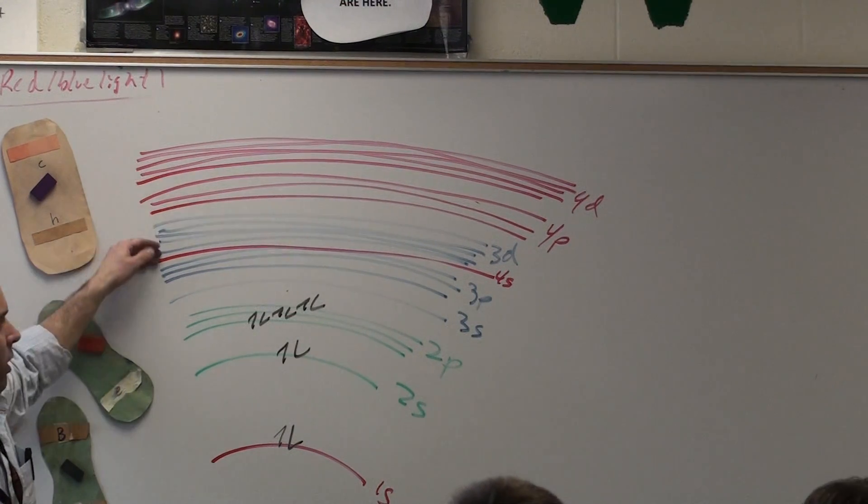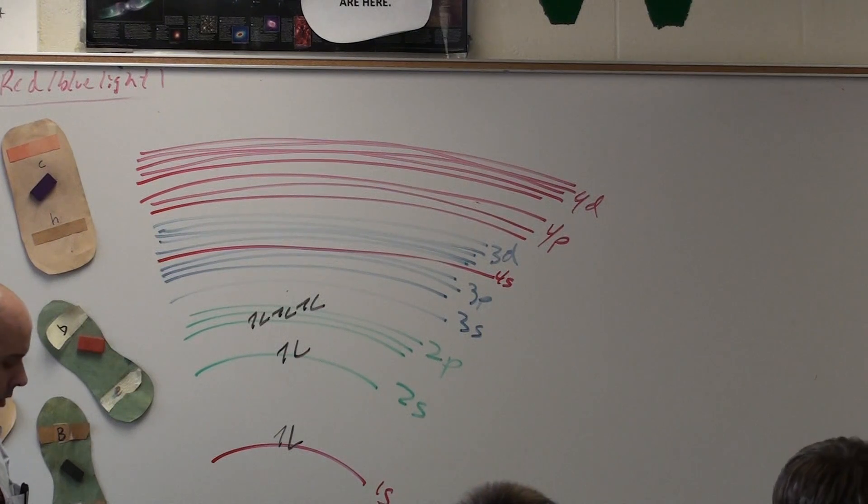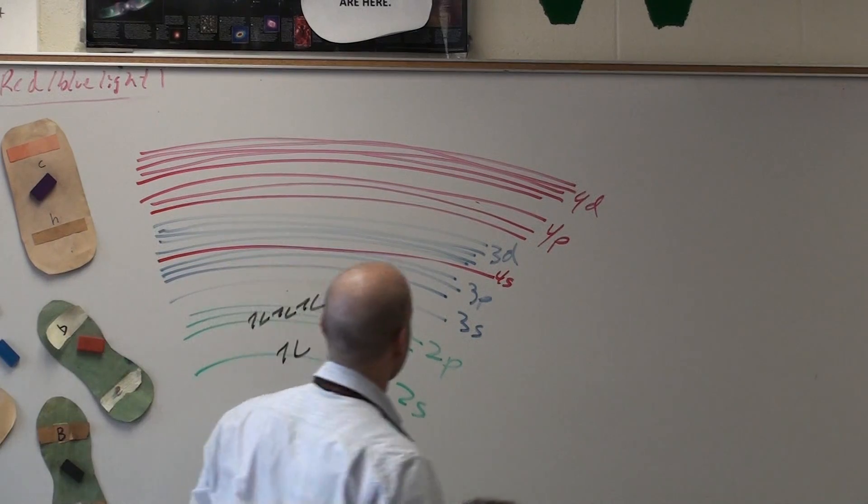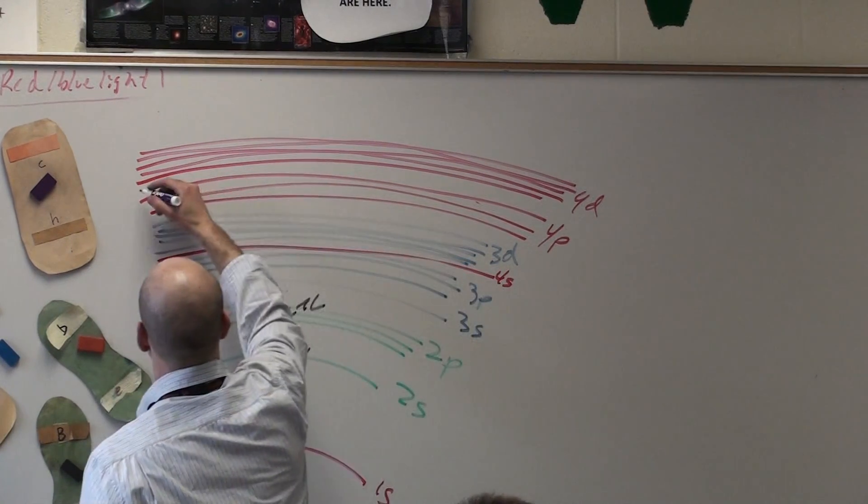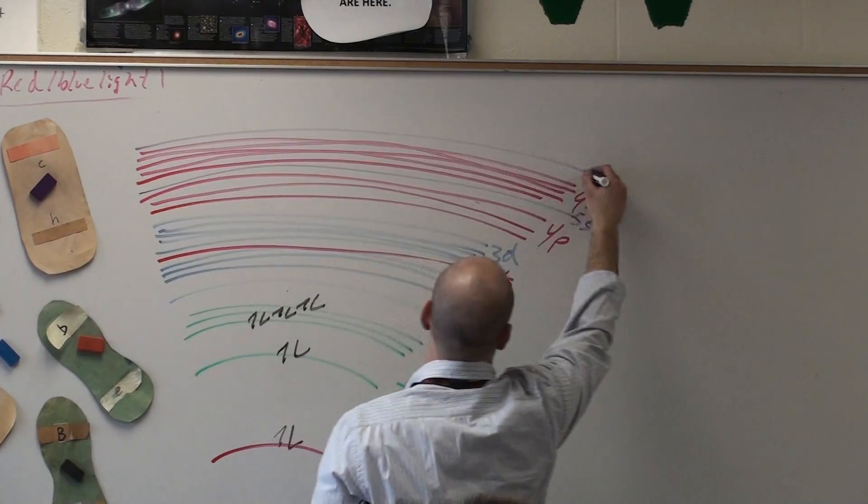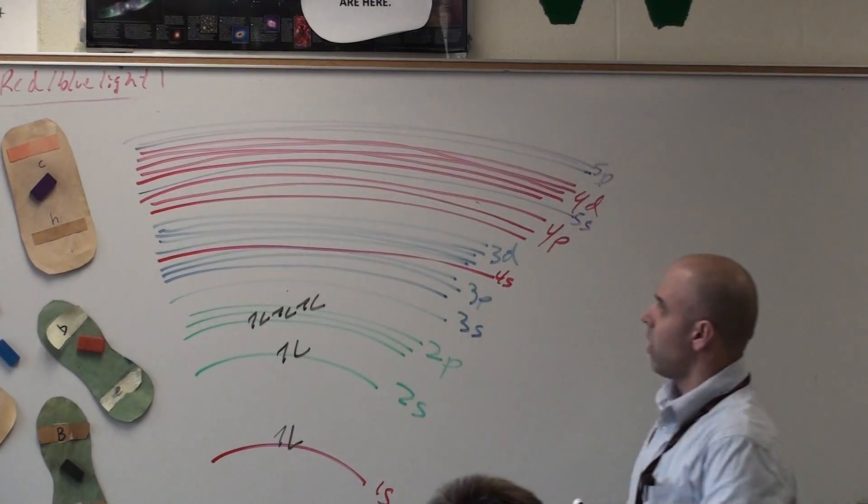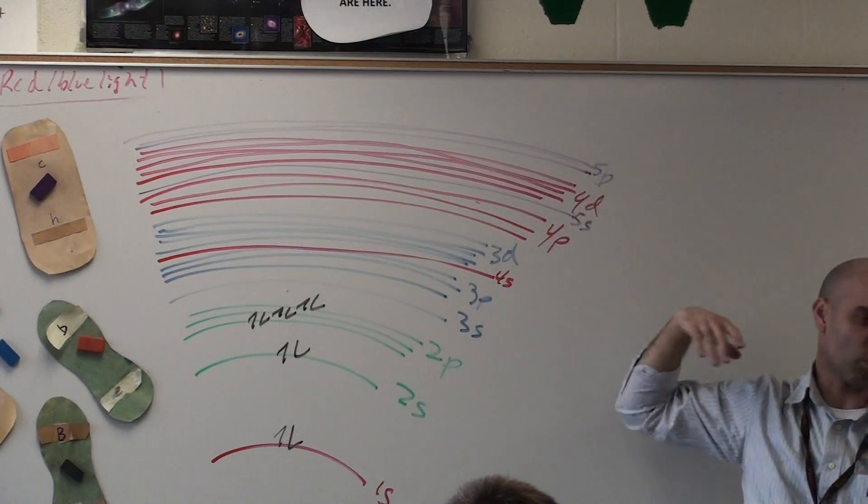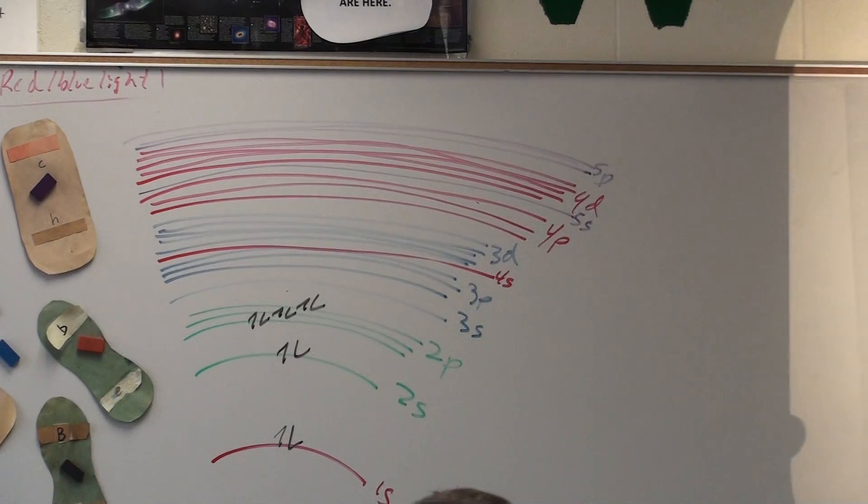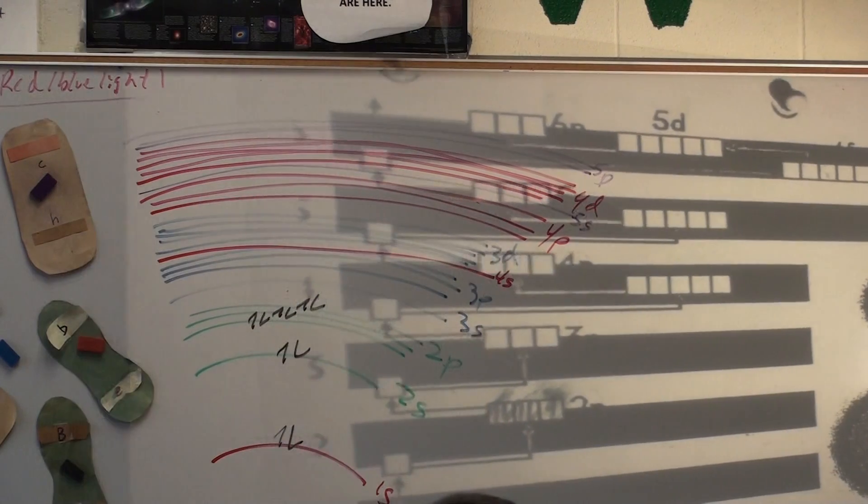And not only does the 4th energy level overlap with the 3rd, the 5th overlaps with the 4th as well. So the 5th energy level comes in right here. There's the 5s. So up here it gets very confusing as what do you fill next. And that's why we have this handy dandy chart to help us remember what do you fill when.